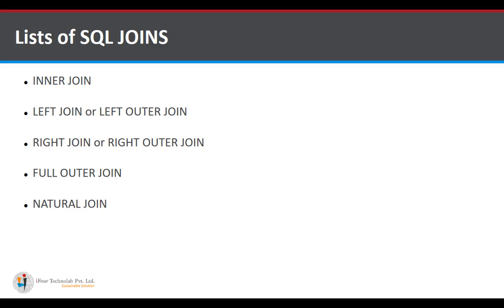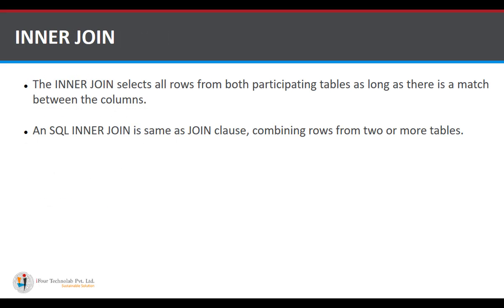Let's start with the inner join. An inner join selects all rows from the participating tables as long as there is a match between the columns — specifically the primary key of both tables. If a match occurs in the primary key of both tables, that value is displayed. SQL inner join is the same as the join clause, combining rows from two or more tables.